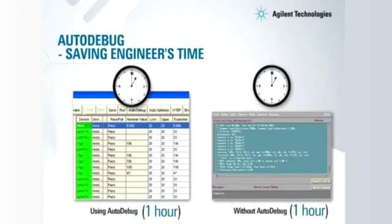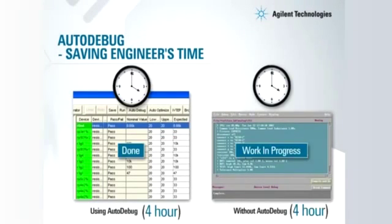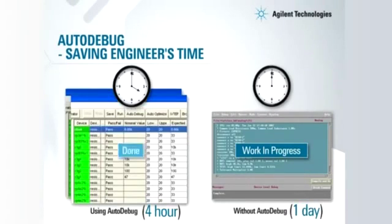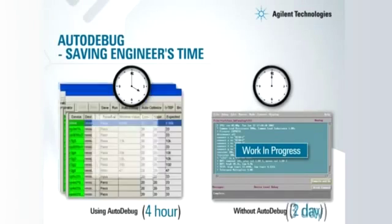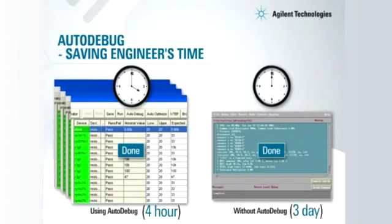With just a click of a button, the auto debug feature can save you tons of engineering time on analog test debug. Test debug time is slashed to four hours from three days, which gives you more time to do more.